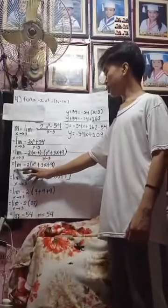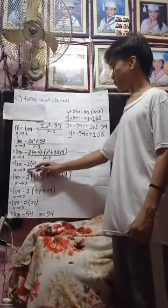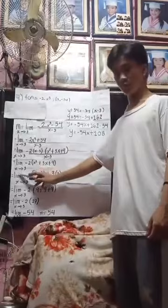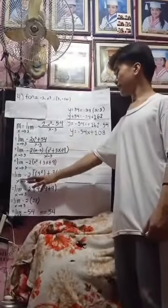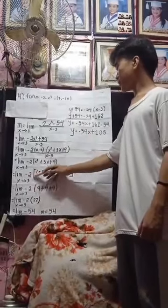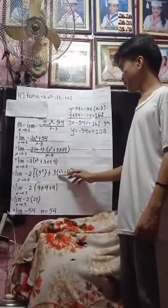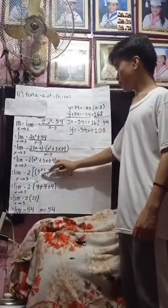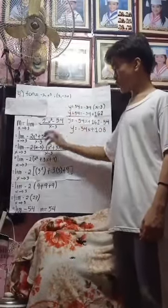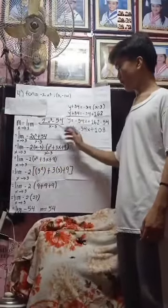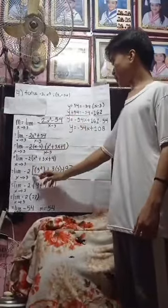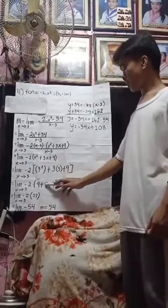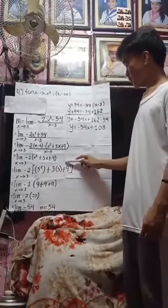Then we have the limit of negative 2 times x squared plus 3x plus 9 as x approaches 3, which equals the limit of negative 2 times 3 squared plus 3 times 3 plus 9 as x approaches 3. To evaluate, we substitute x equals 3 into our expression. Then 3 squared is equal to 9 and 3 times 3 is equal to 9, then copy this plus 9.